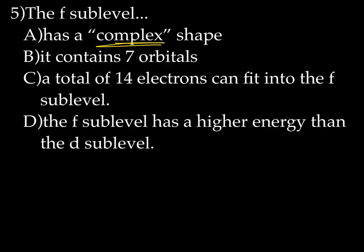You need to know the four sublevels — S, P, D, and F — which one has the lowest energy in order, how many orbitals are in each, and how many electrons. The S has one orbital, two electrons. The P has three orbitals, six electrons. The D has five orbitals, ten electrons. And the F has seven orbitals, 14 electrons.